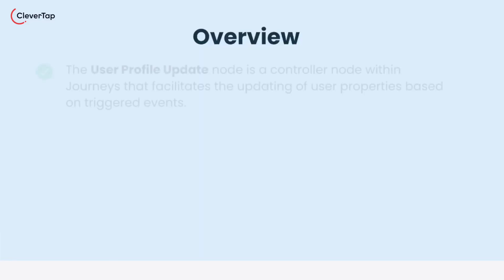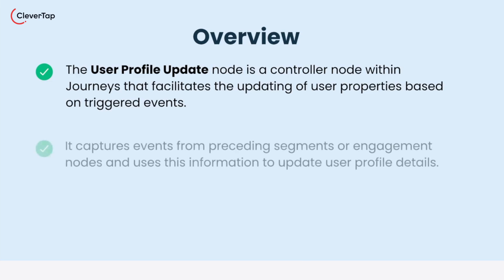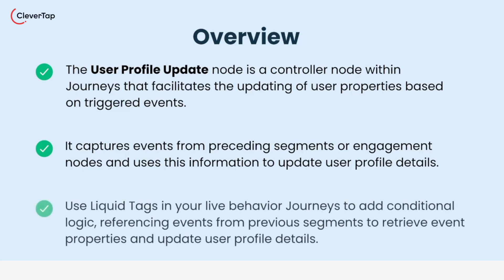Let's understand what is a User Profile Update node. The User Profile Update node is a controller node within Journeys that facilitates the updating of user properties based on triggered events. It captures events from preceding segments or engagement nodes and uses this information to update user profile details. You can use liquid tags in your live behavior journeys to add conditional logic, referencing events from previous segments to retrieve event properties and update user profile details.